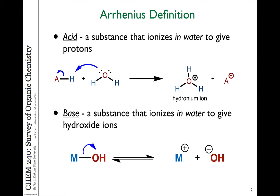So a substance that ionizes in water to give protons associated with water molecules is an Arrhenius acid. In contrast, an Arrhenius base is a substance which ionizes in water to give hydroxide ions — for example, sodium hydroxide or potassium hydroxide, where the metal indicated would be sodium or potassium.